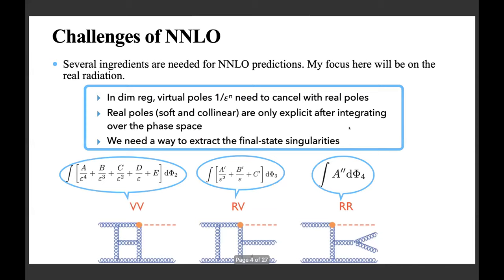What are the challenges of NNLO? There are many ingredients you need to provide to have a cross section at this level of precision. You need double virtual corrections, one-loop virtual corrections with an additional radiation, and double real-radiation contributions. Each of these components has infrared singularities. In the pure virtual case, working in dimensional regularization, you can integrate inclusively and see them explicitly as poles in epsilon, but whenever you have real radiation those singularities are implicit, so we need a way to extract them.